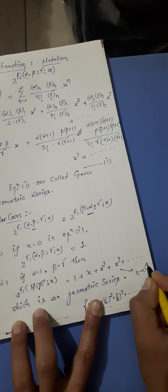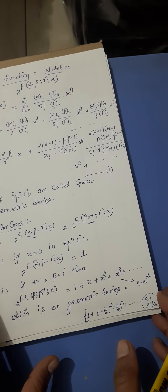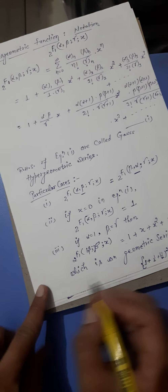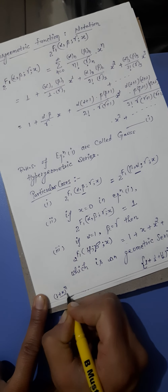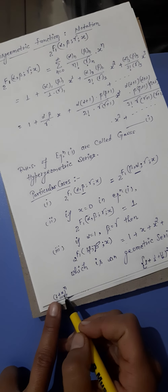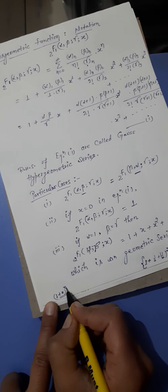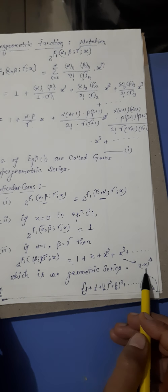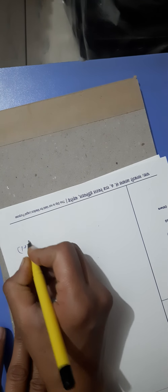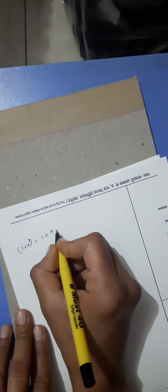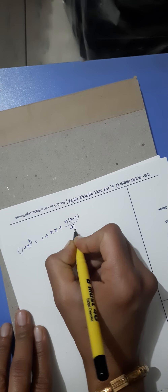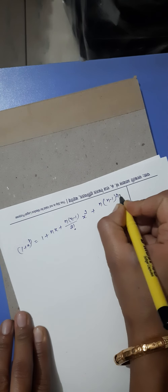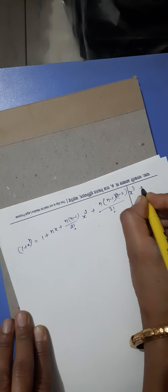If we use the expansion formula for (1 - x)^(-1), we can represent the geometric series this way. The general expansion formula for (1+x)^n expands as 1 + nx + n(n-1)/2! · x² + n(n-1)(n-2)/3! · x³ + and so on.